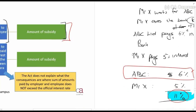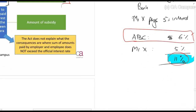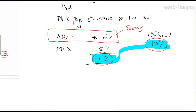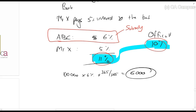So if the employer paid during the year 100,000 times six percent, that equals 6,000 rands. That 6,000 rands will be treated as a subsidy — so it's not treated as a low-interest loan but as a direct subsidy added to income.